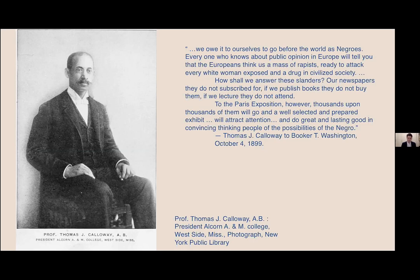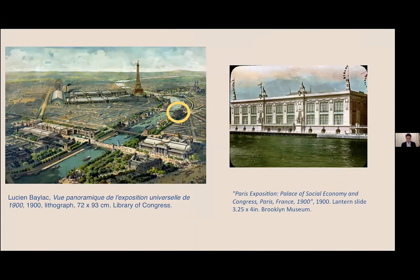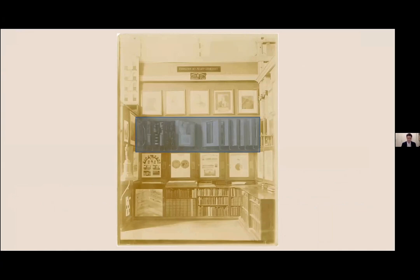With the backing of Washington and just a few months before the opening of the fair, Calloway successfully petitioned the United States government to include and fund a display organized under his direction — an exhibition that would demonstrate the social, economic, and cultural gains made by Black Americans since emancipation. The exhibition envisioned by Calloway would take shape as the American Negro Exhibit, installed in the Palace of Social Economy, a pavilion at the fair dedicated to international social reform movements. The exhibition consisted of several principal sections.